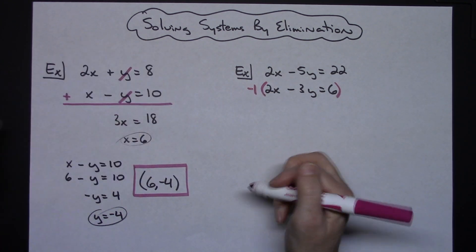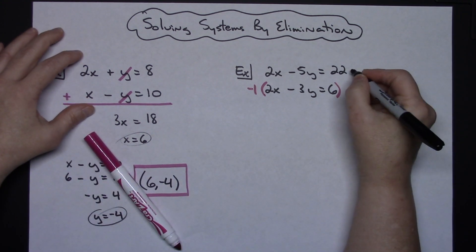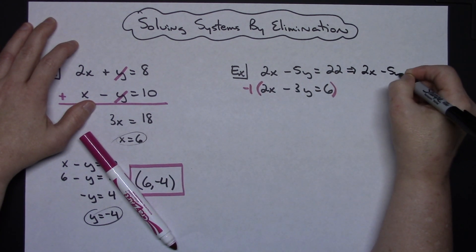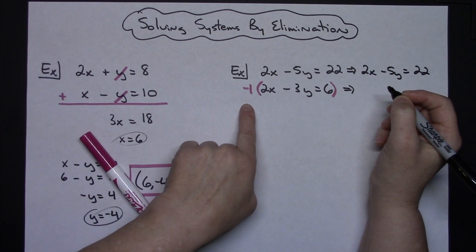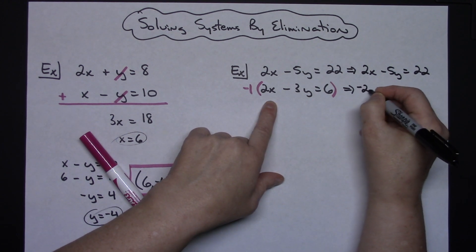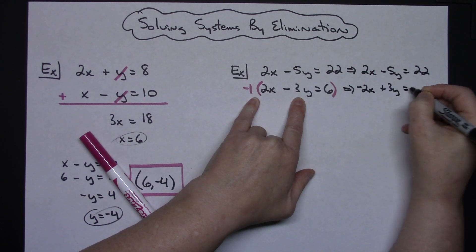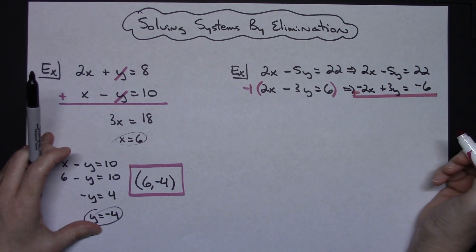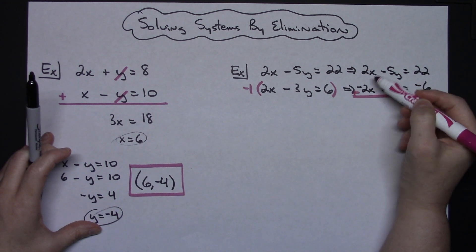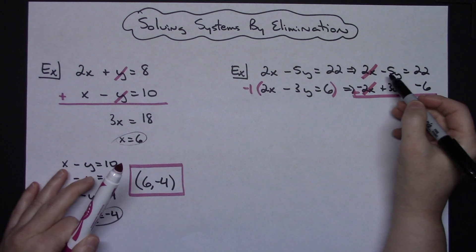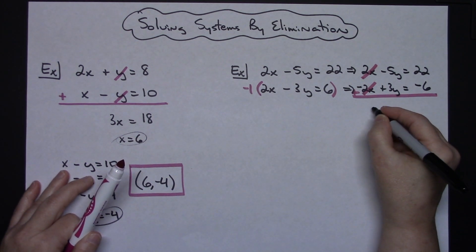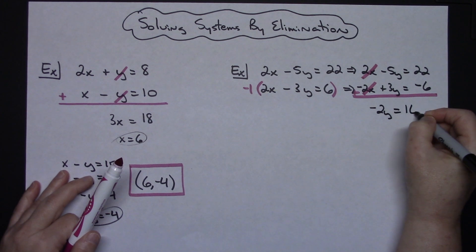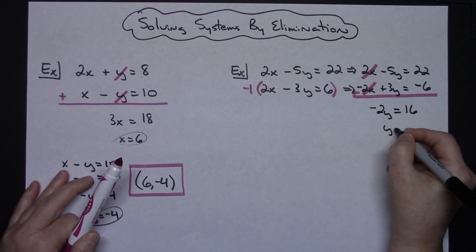I will distribute negative 1 to all of the terms. The top equation stays the same: 2x minus 5y is equal to 22. On the bottom equation, multiplying by negative 1 gives negative 2x plus 3y equals negative 6. Now adding down: 2x plus negative 2x — the x terms are eliminated. Negative 5 plus 3 gives negative 2y, and 22 minus 6 gives 16. Dividing both sides by negative 2, I get y equals negative 8.